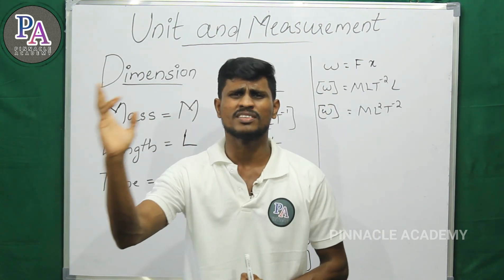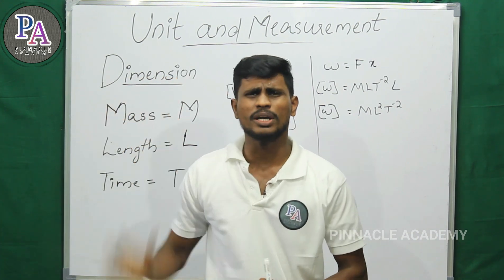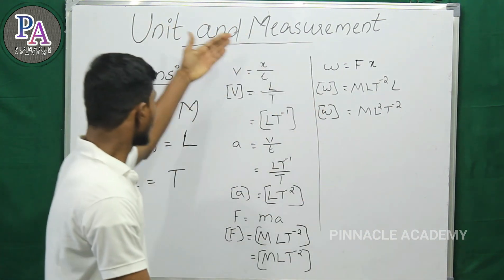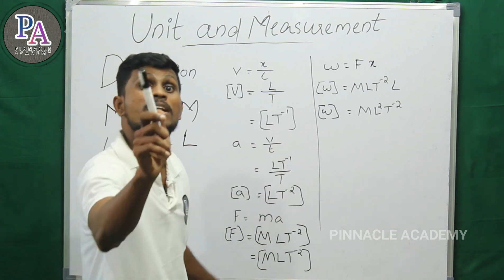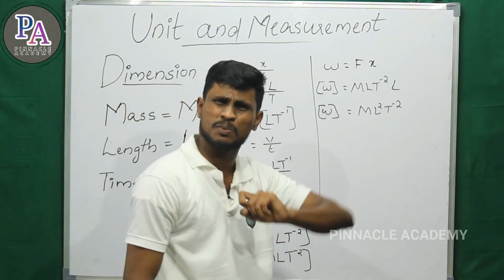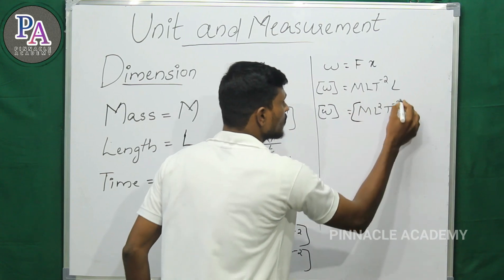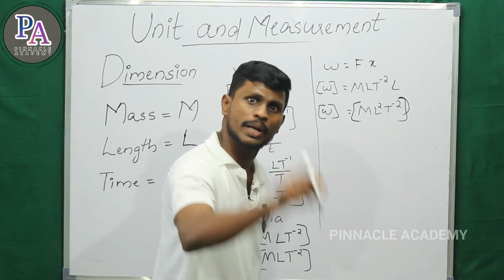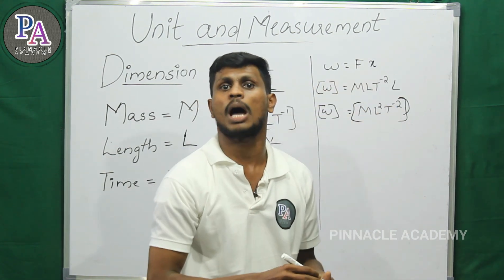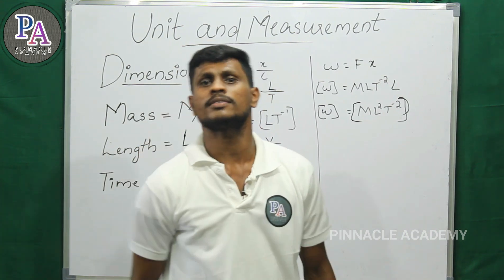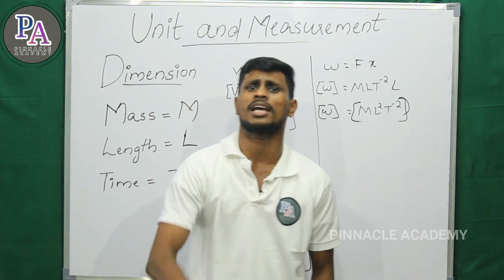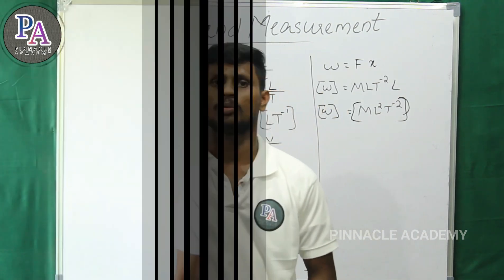The fundamental physical quantities in the table — mass M, length L, and time T — are the base. Velocity is expressed in terms of these fundamental physical quantities. This is the concept of dimensional analysis.